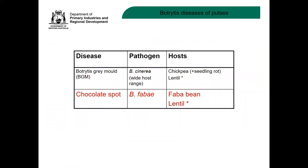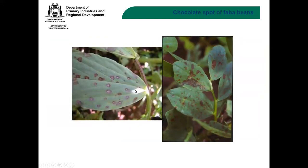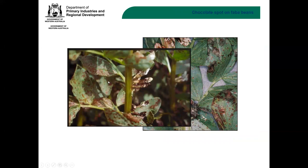In faba beans, botrytis causes chocolate spot, which is mainly stubble-borne and seed-borne. On the leaves there are browny-red lesions scattered across the leaf, but as the disease progresses these lesions coalesce to form larger lesions. There is another issue that can occur on faba beans caused by red-legged earth mites, which tends to get mixed up with chocolate spot. The red-legged earth mite spots tend to be more on the underside of the leaves, whereas chocolate spot tends to be more on the top side of the leaf.